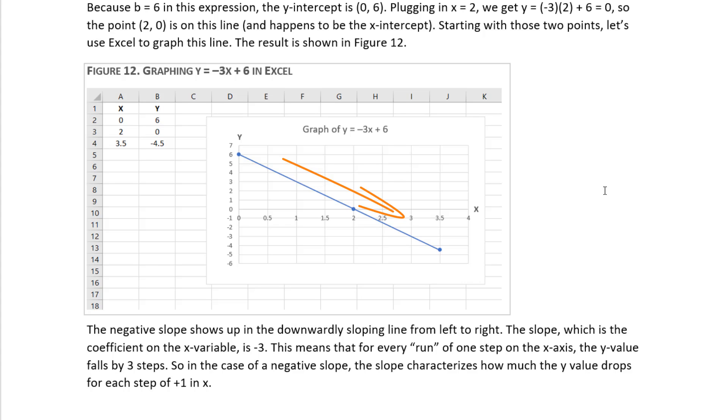The slope, which just as a reminder, is the coefficient on the x variable, is negative 3. This means that for every run of one step on the x-axis, the y value falls by three steps. So the negative tells you that the y falls. In the case of a negative slope, the slope characterizes how much the y value drops for each step of plus 1 in x. So it's not exactly rise over run, it's drop over run or fall over run.